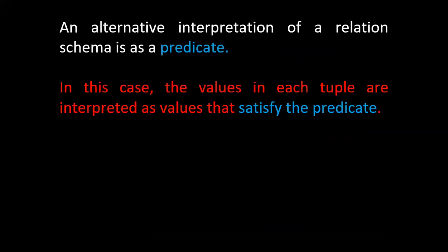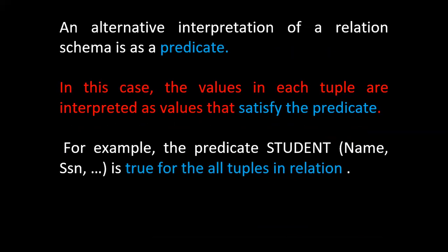The first table asserts the fact that there is a student named Ram belonging to fifth semester, CSE, with USN 1GA10CS001. The second row states the fact about student Sita. So relation schema can be interpreted as a declaration or assertion. The relation can also be interpreted as a predicate — values in each tuple should satisfy the predicate, meaning the details written about each student should be true for all tuples in the relation.